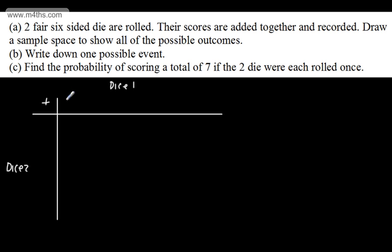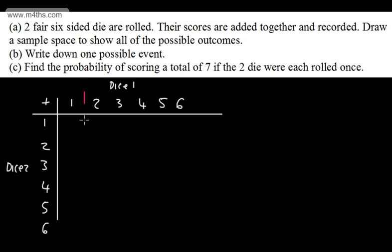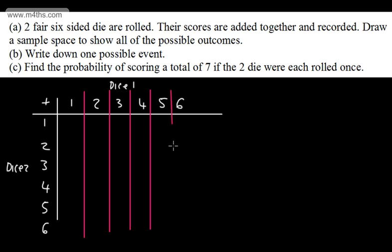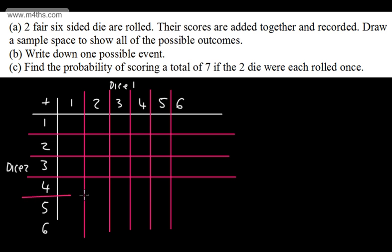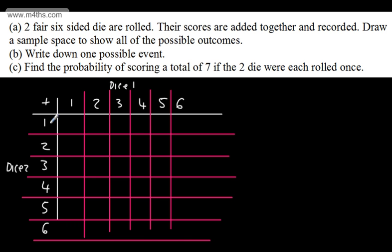Dice one can show 1, 2, 3, 4, 5, or 6 along one axis, and dice two shows 1, 2, 3, 4, 5, or 6 along the other. I'll put some grid lines on to make it easier. Working systematically along the top row: 1+1=2, 2+1=3, 3+1=4, 4+1=5, 5+1=6, and 6+1=7.